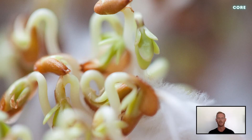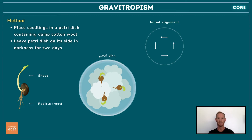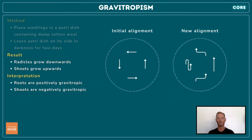To investigate gravitropism and phototropism in shoots and roots, place several seedlings in a petri dish containing damp cotton wool, making sure that the radicle or root of each seedling is aligned differently. Close the lid and place the petri dish on its side in a dark cupboard. Leave to grow for two days and then take note of any directional changes in growth. Regardless of their initial orientation, the radicles all grow downwards and the shoots all grow upwards. From this, we conclude that roots are positively gravitropic and shoots are negatively gravitropic.